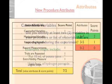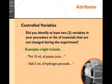The first attribute is simply identifying the controlled variable. At minimum, you must include two variables in your procedure that don't change throughout the experiment. So for example, you might put 10 milliliters of potato juice in the container or you may add 5 milliliters of the hydrogen peroxide substrate. These are things that are not the manipulated variable. So these are not temperature related. They're different things.